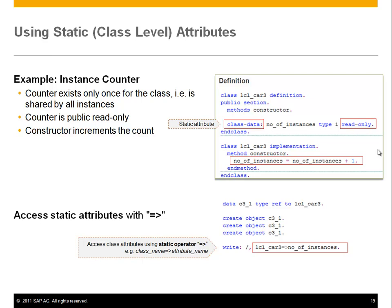How do you access it? You can access static attributes with what we call the double arrow — also called the static operator. You use class name, double arrow, then the static attribute. So instead of the normal dash-greater-than arrow for instance attributes, the double arrow is for class attributes and class methods. You can also define number_of_instances as READ-ONLY, making it visible publicly but writable only from inside the class.